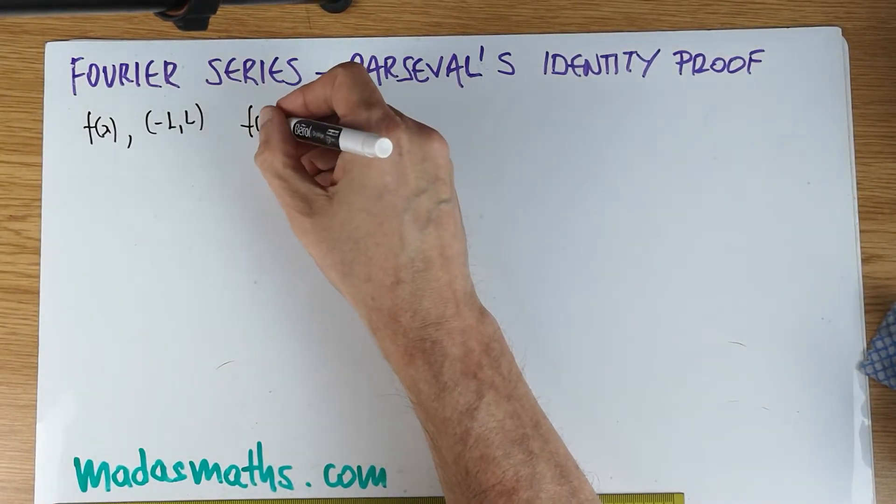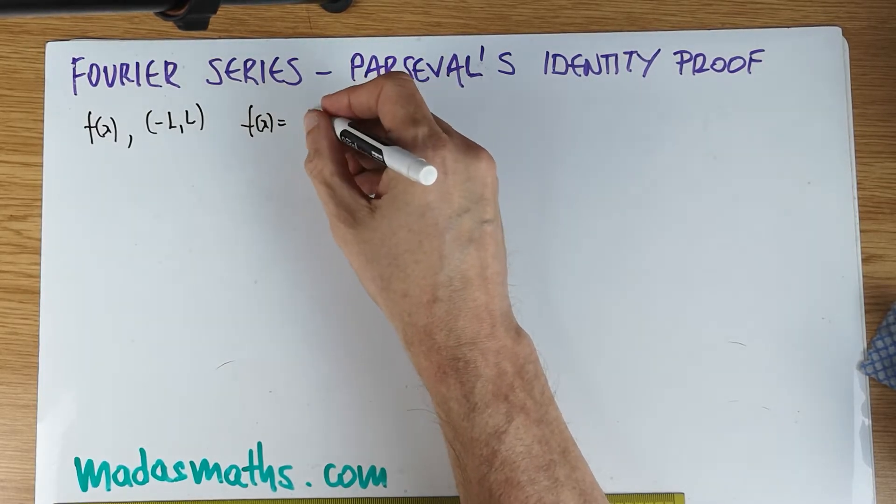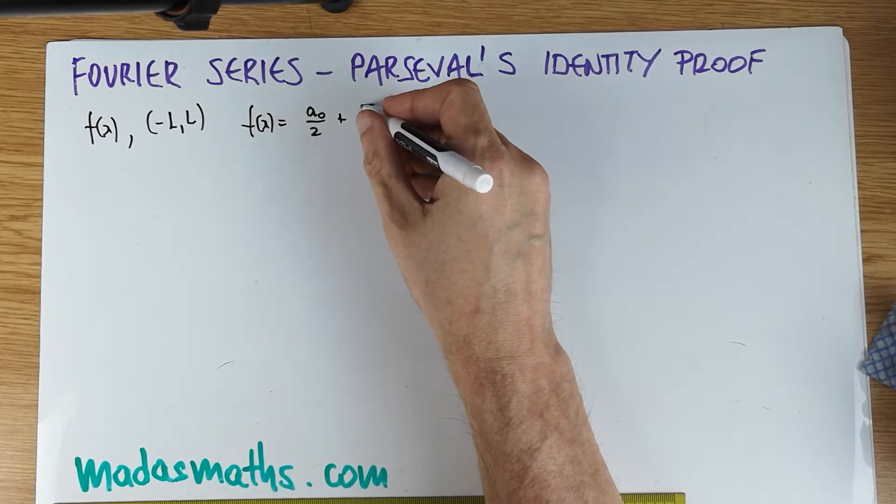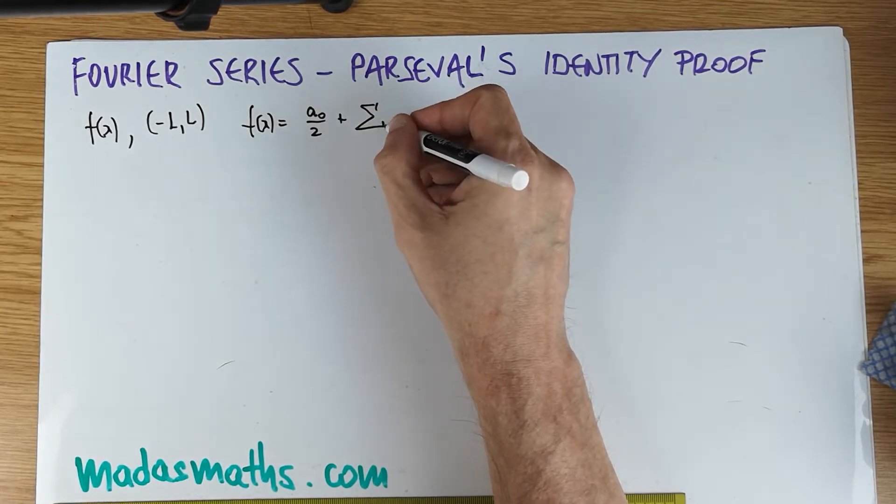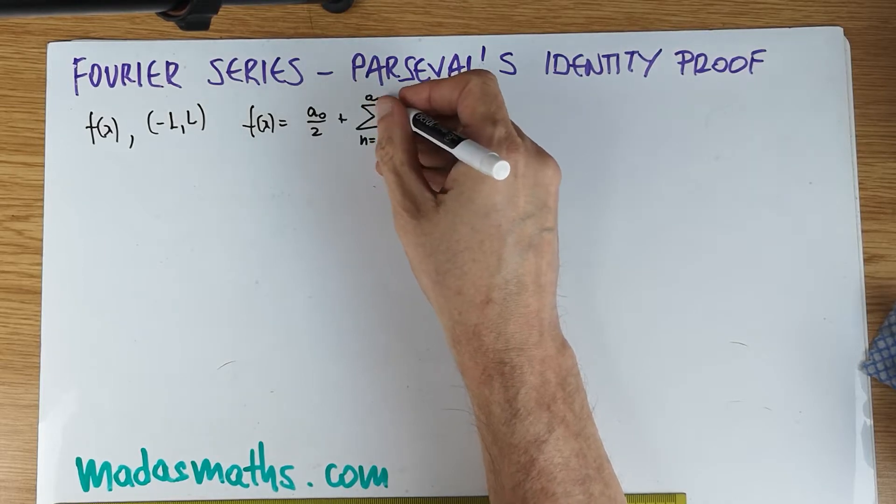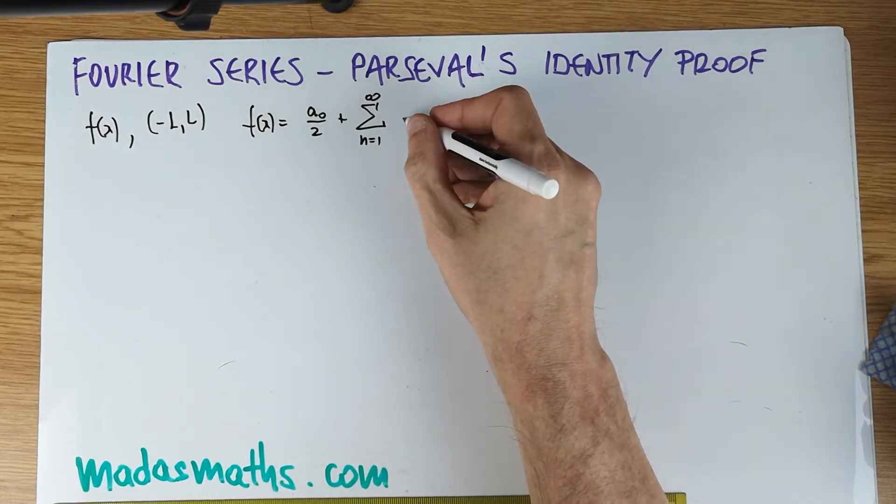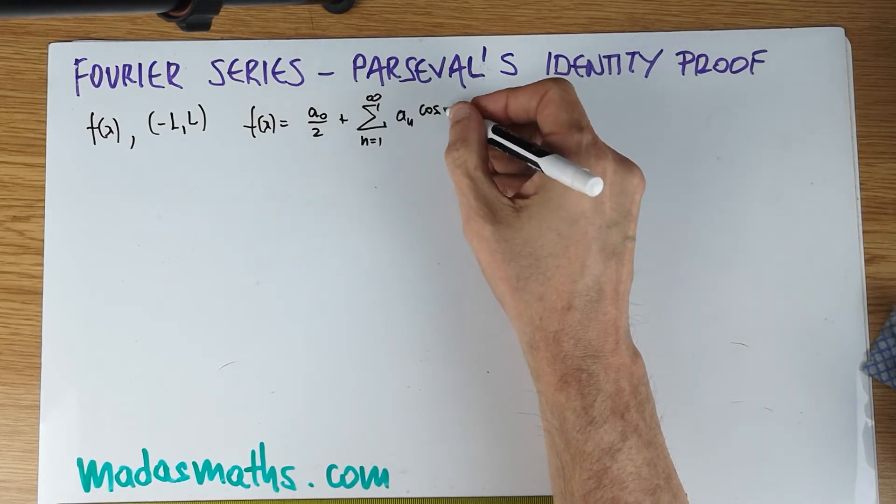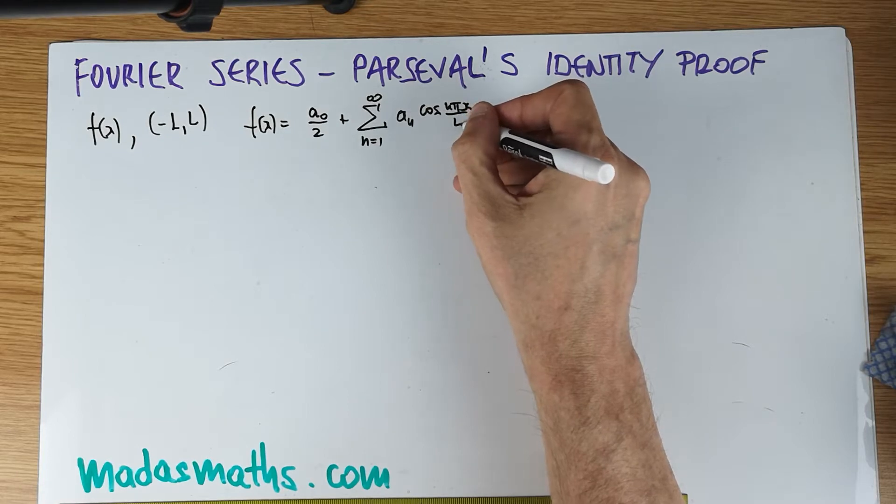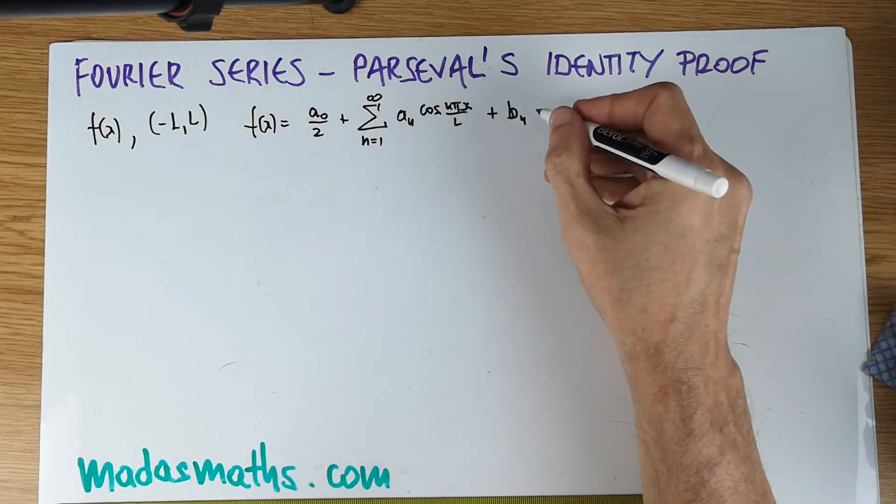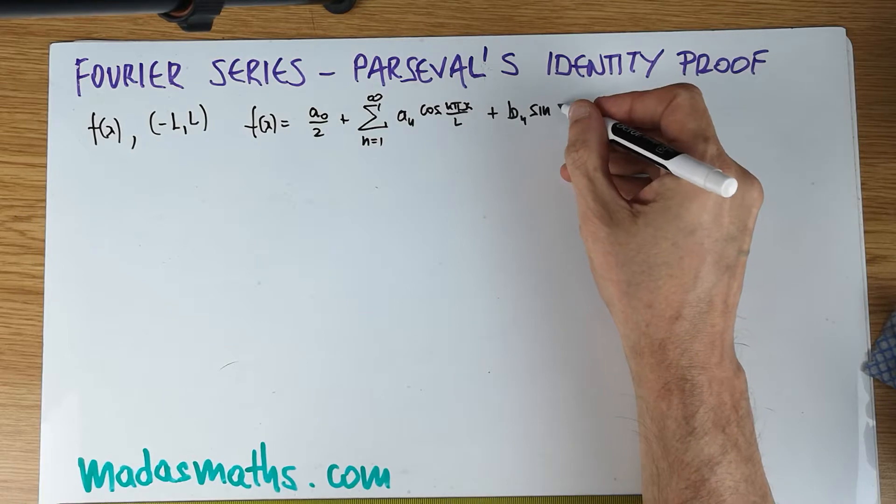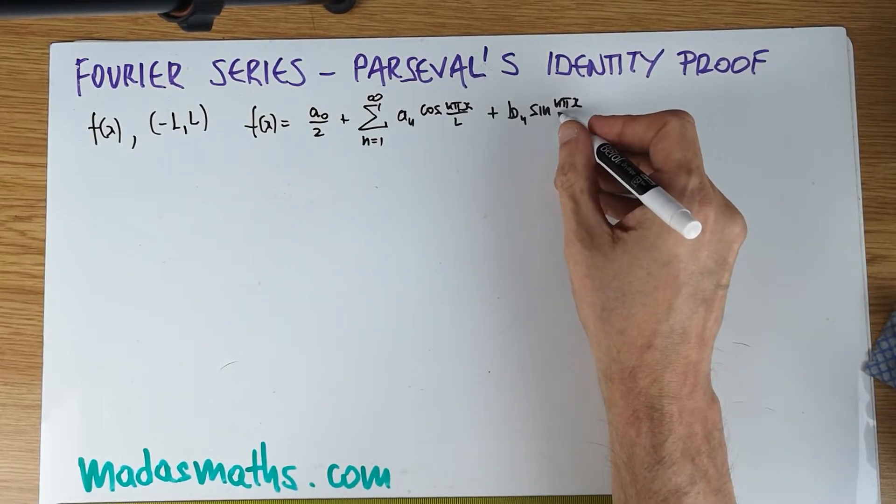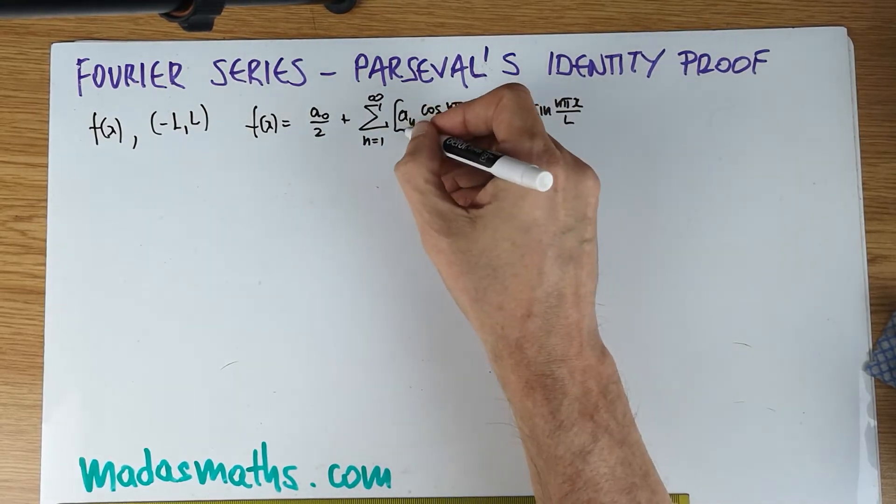If we have f of x defined on this interval from minus l to l, then our f of x can be written as a_0 over 2, plus the sum from n equals 1 to infinity of a_n cos(n*pi*x/l) plus b_n times the infinite series in sines and cosines. Usually if it's odd or even, there'll be either one or the other and not both.